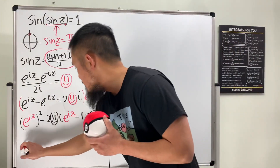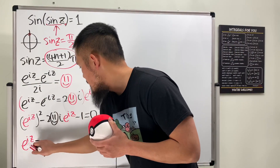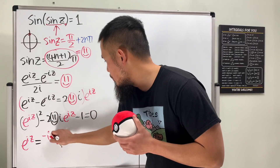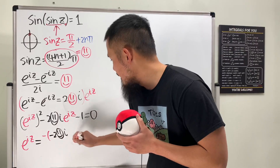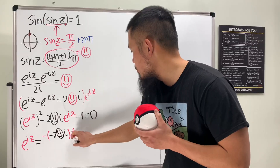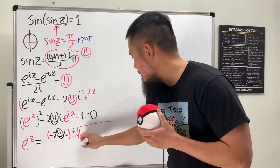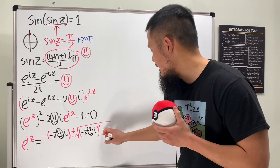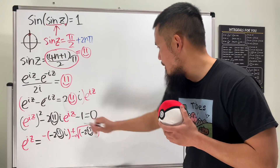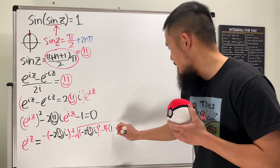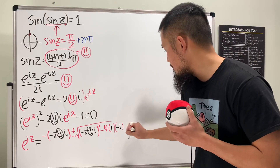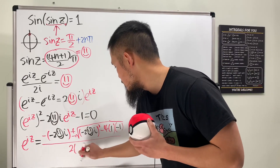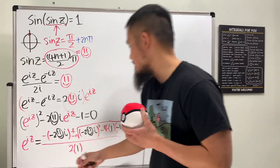Just like the usual business, we use the quadratic formula. We have e^(iz) equals negative b — which is 2·happy_face·i — plus or minus the square root of (2·happy_face·i)² minus 4·(1)·(−1), all over 2·(1).